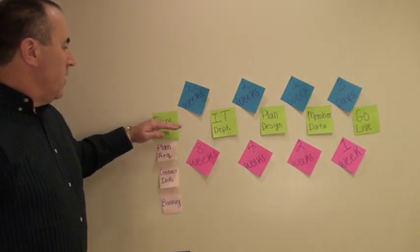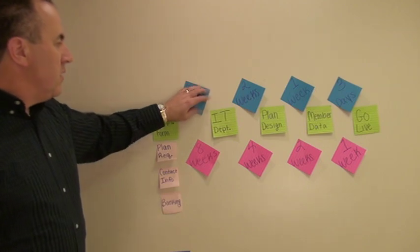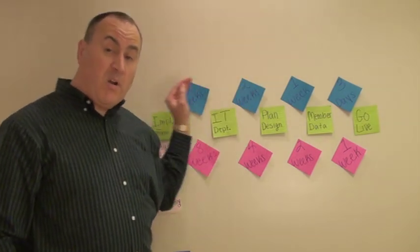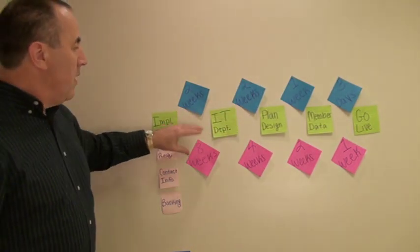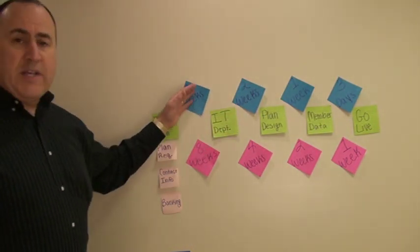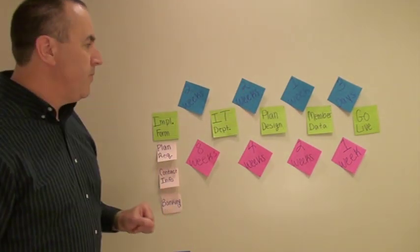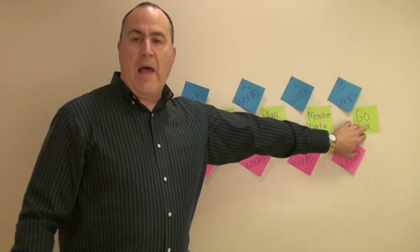It takes about three days to go live. So right here, if we could do this, and we'll call this our to-be, our future state, what we want to get to, we cut almost 10 weeks out of the process. And we could probably make that go live date then.